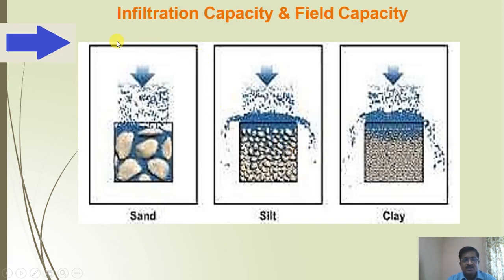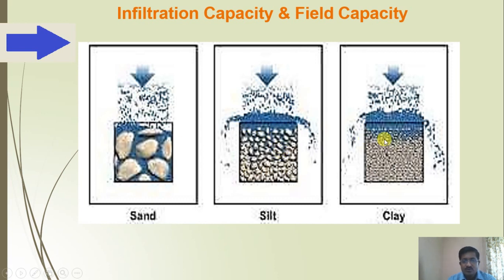To understand infiltration capacity, a figure shows three different strata: sand, silt, and clay. In sandy soil, maximum water will infiltrate because more pores are present. In silt, pores are fewer compared to sandy soil, so infiltration is less. In clay soil, it is more dense with very few voids, so infiltration is least and maximum water flows as runoff.